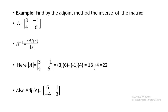Now, adjoint of A. How to calculate the adjoint when dealing with a 2 by 2 matrix: the method is to swap the positions of the principal diagonal elements. So 3 was at row 1, column 1 and 6 was at row 2, column 2 — we swap their positions, so now it will be 6 and 3 instead of 3 and 6.